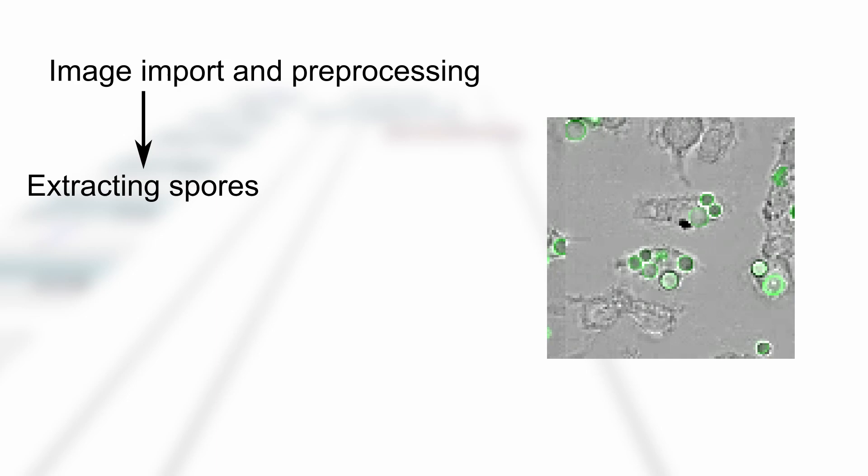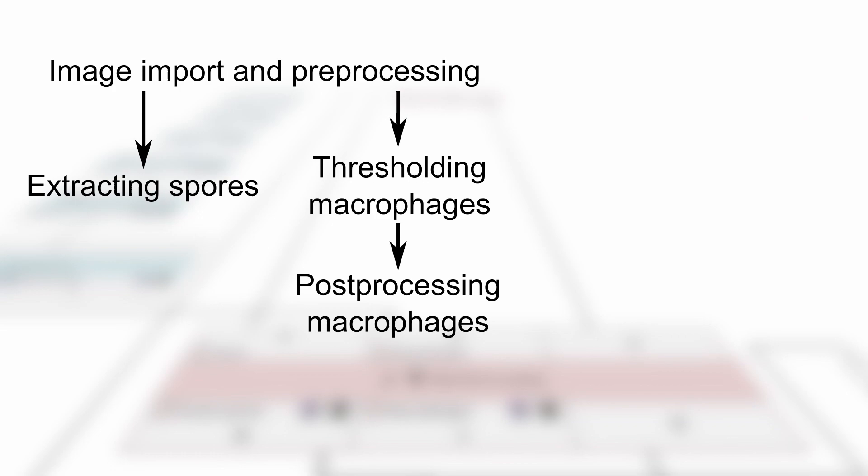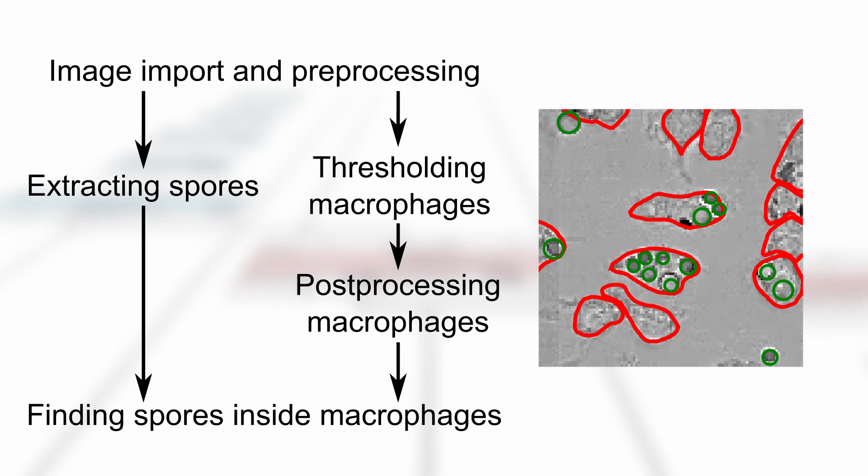The processing will start with importing the images and then carrying out some preprocessing. In the next step, we will then identify the fungal spores and then we will carry out the rough segmentation of macrophages, followed by post-processing. And finally, we will identify those spores that are actually inside the macrophages.